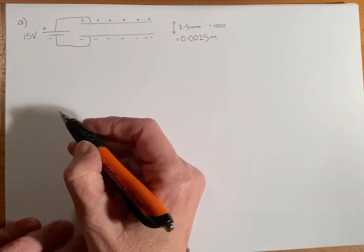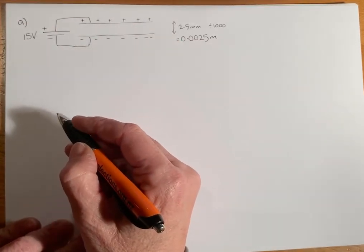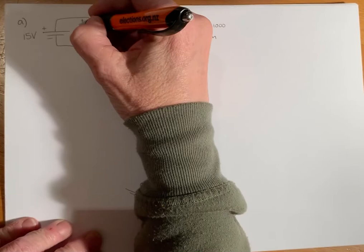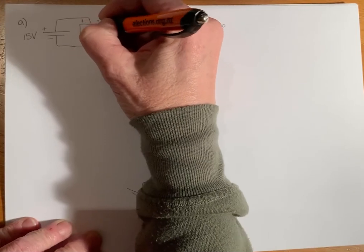Okay, so part A asks us to draw in the direction of the field lines. So it's the direction that a positive charge would move.